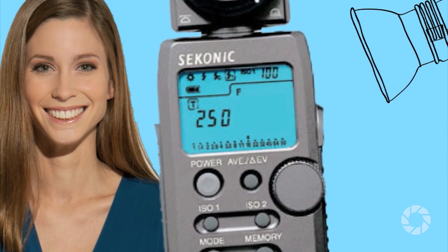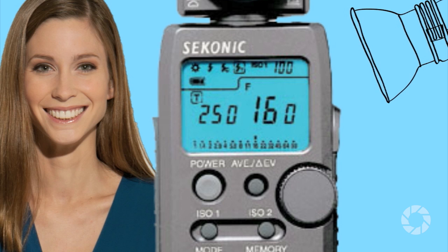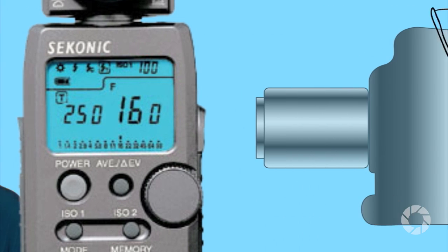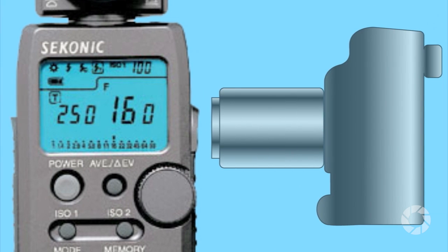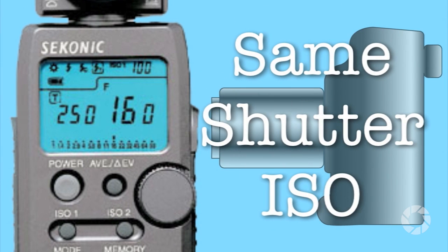In a normal studio setup you'll set your camera and light meter to the same shutter speed and ISO setting. When you take a meter reading, the light meter will tell you the correct aperture value and you'll set your camera accordingly. Once you're all set up, you'll only have to worry about the aperture value.